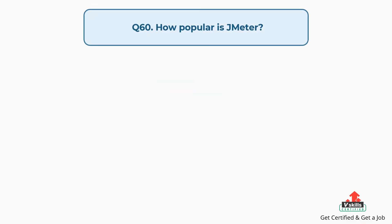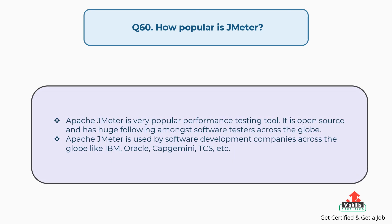Question 60: How popular is JMeter? Apache JMeter is a very popular performance testing tool. It is open source and has a huge following among software testers across the globe. Apache JMeter is used by software development companies worldwide such as IBM, Oracle, Capgemini, and DXC.